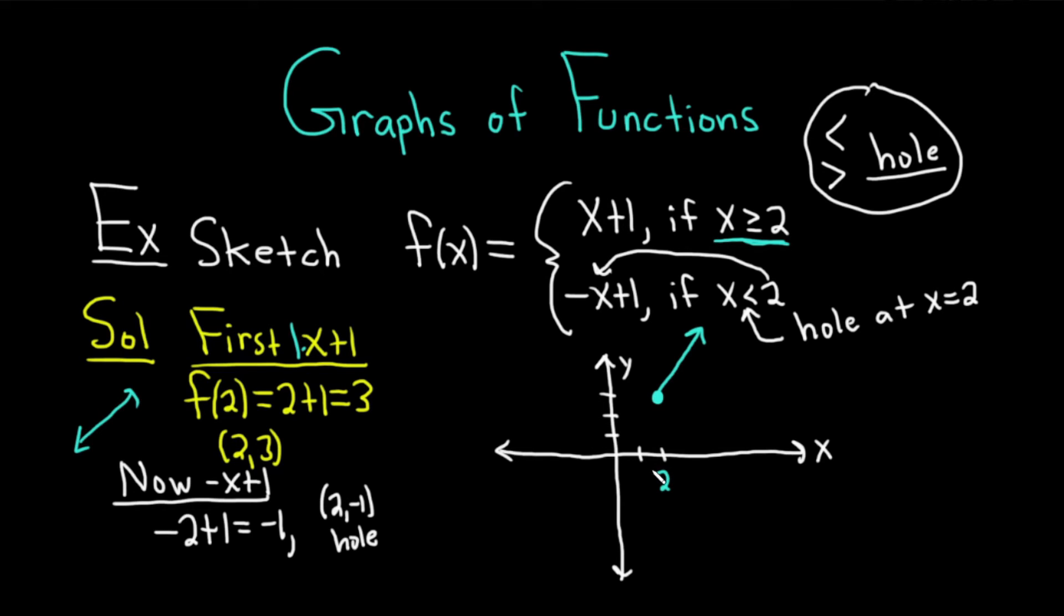All right. The hole is at 2 negative 1. So basically I have a 2 there where the hole should be. It's right there. I'm going to cover the 2. There's the hole. And now we know we have to draw it to the left, right? So we have to figure out what it's going to go through.